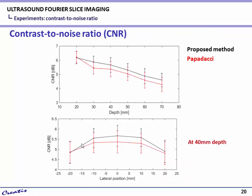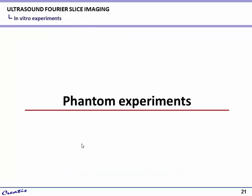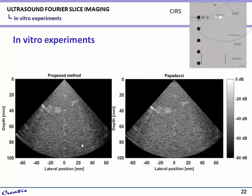We compared our method with the method of Papadachi. We can see that the CNR decreases with depth and also with lateral position, and we get almost the same result as Papadachi's method. We can also see similar image quality in experimental data reconstruction, which shows the feasibility of our method on real data. However, there are some improvements needed to improve the image quality.